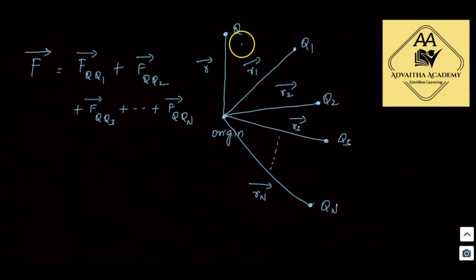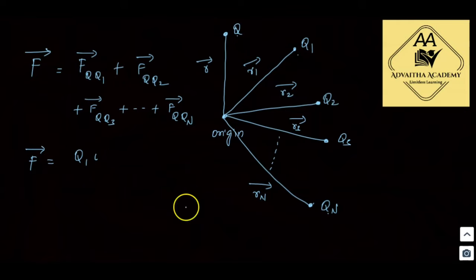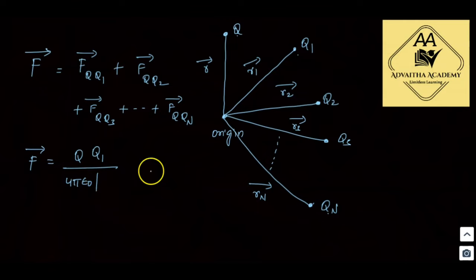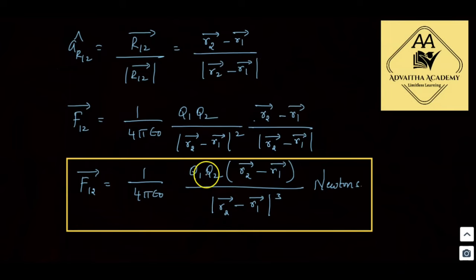To find the total force exerted by q on all n charges, we add all the individual forces: force of q on q1, plus force of q on q2, and so on. For the force on q1: it is q·q1 / (4πε₀) · (r2-bar − r1-bar) / |r2-bar − r1-bar|³.